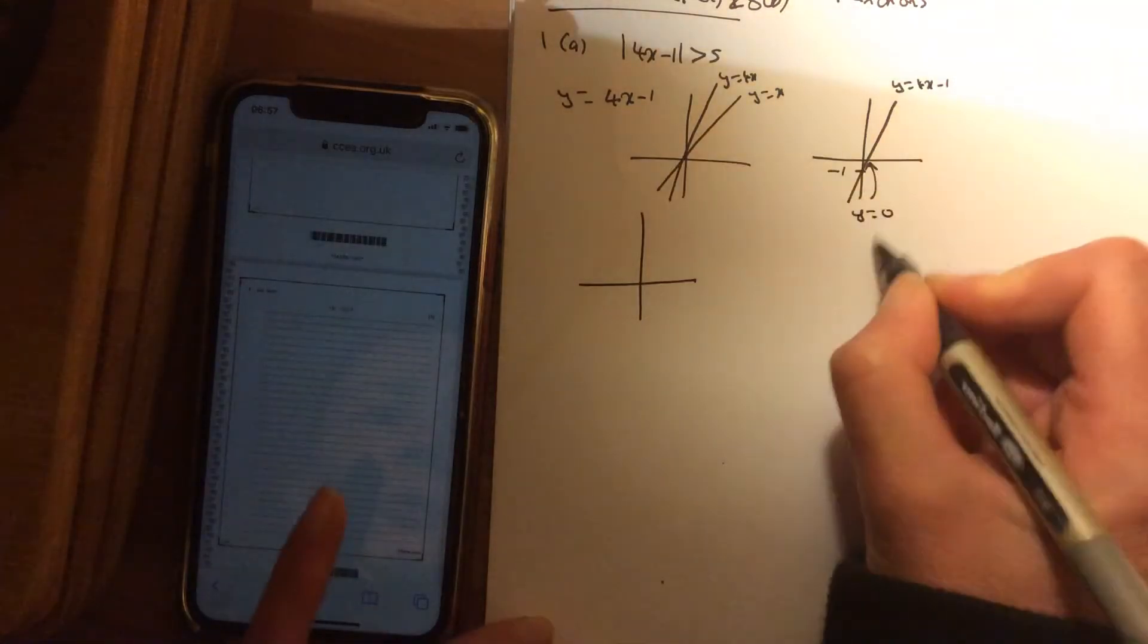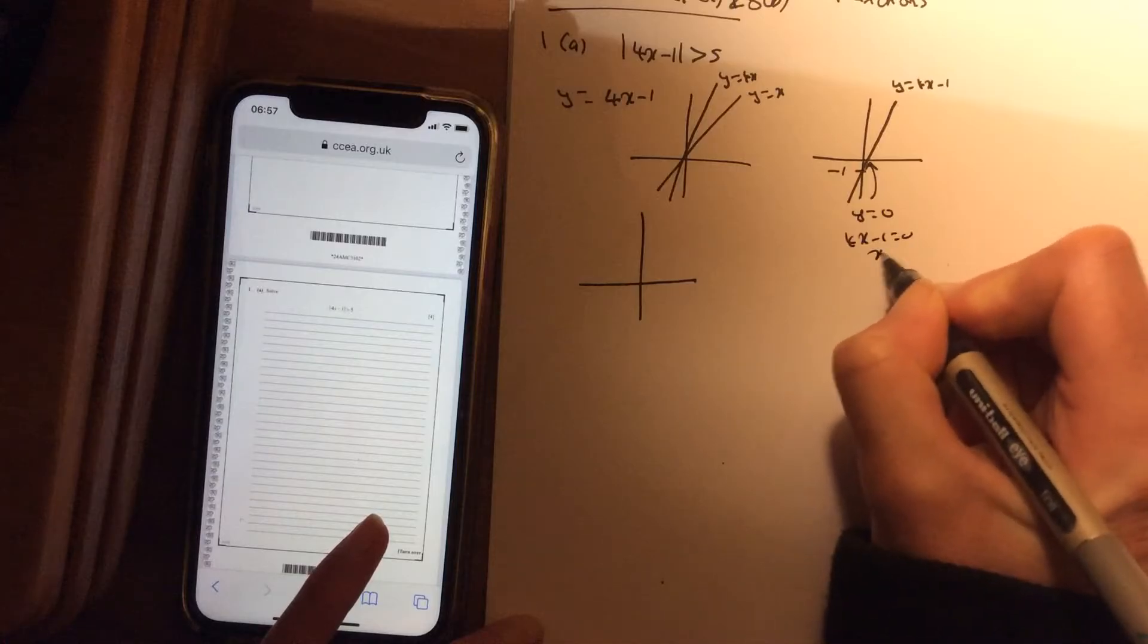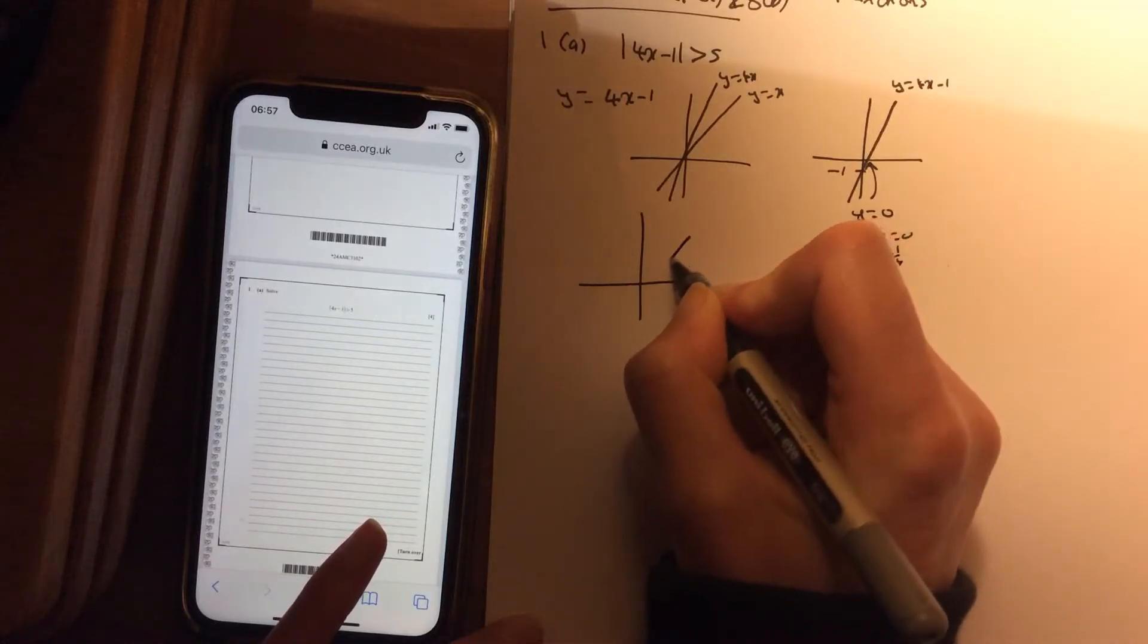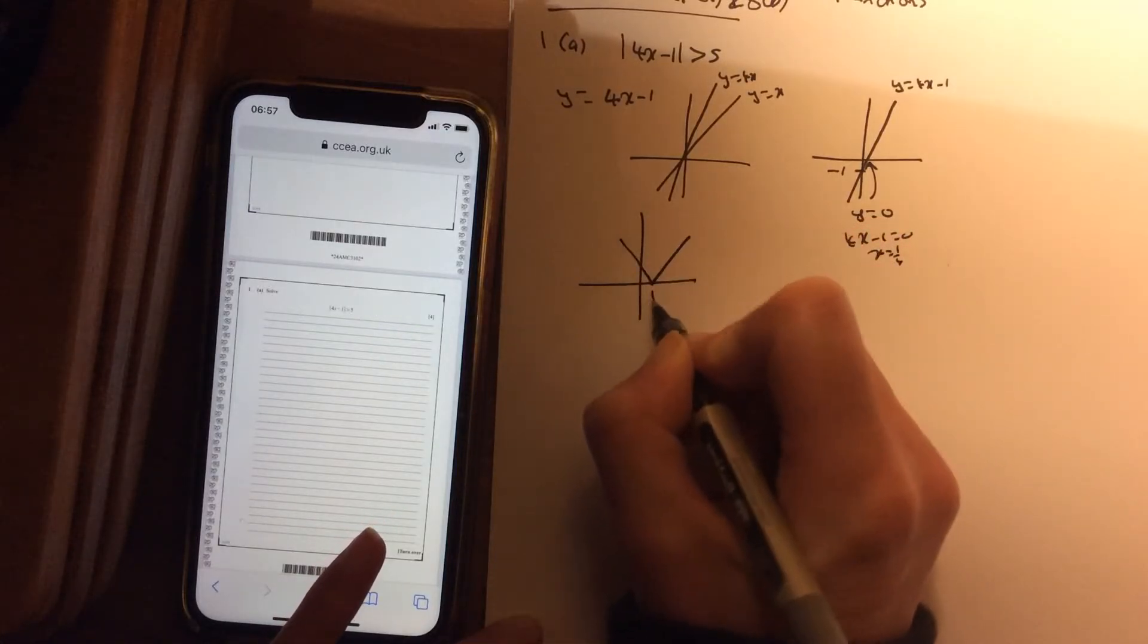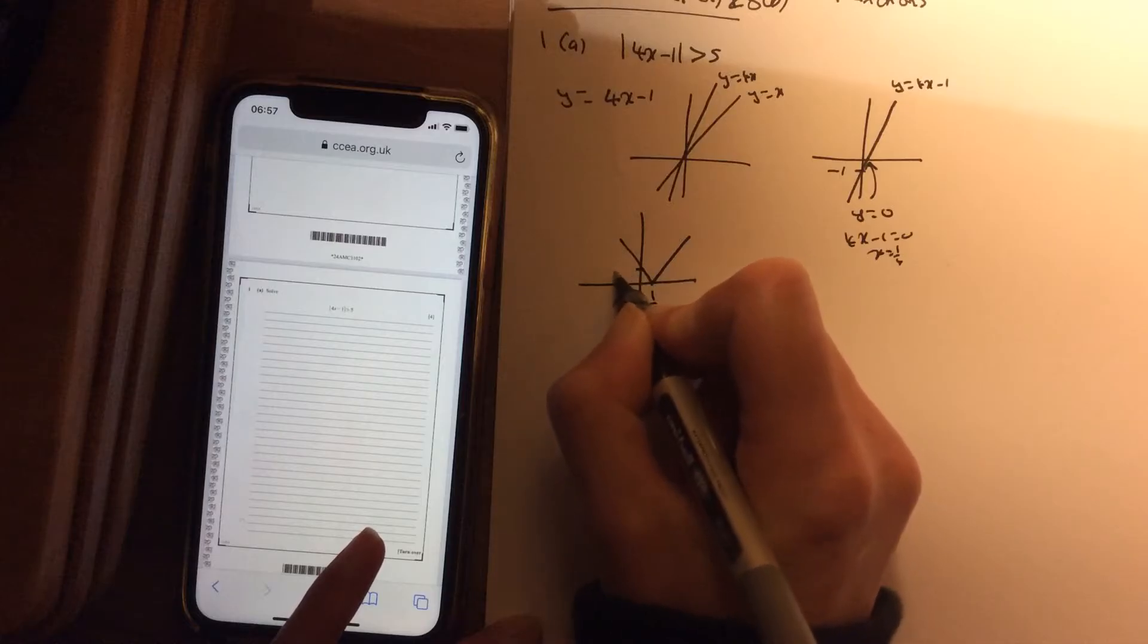So if y is 0, 4x - 1 is 0, so x is a quarter. You don't necessarily define that point, but it is just good practice. And that is now 1.